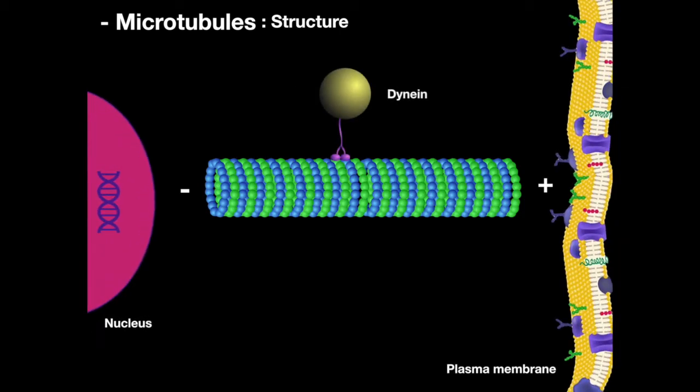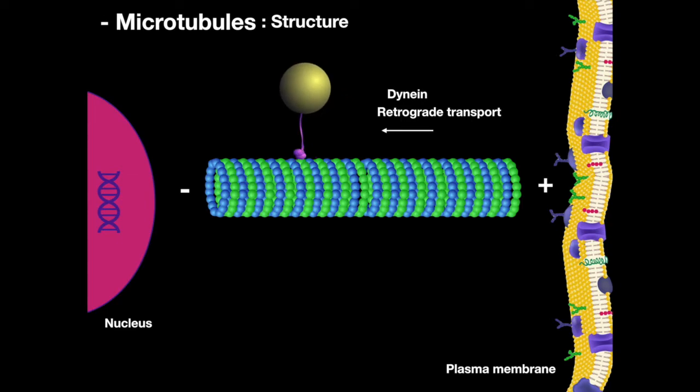The protein dynein travels from the positive to negative end in retrograde transport. Kinesin travels from the negative to positive end in anterograde transport.